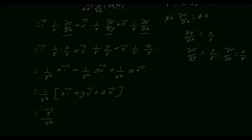From this, we have proved that the gradient of log r equals r vector divided by r squared, that is, ∇(log r) = r⃗ / r².